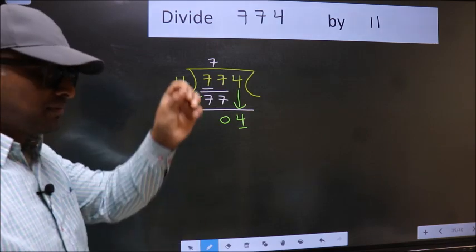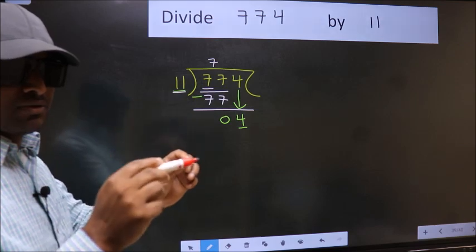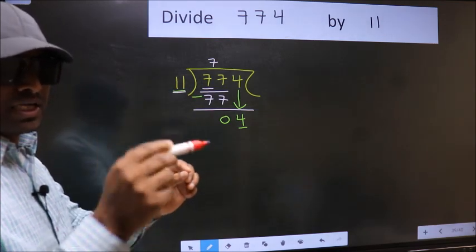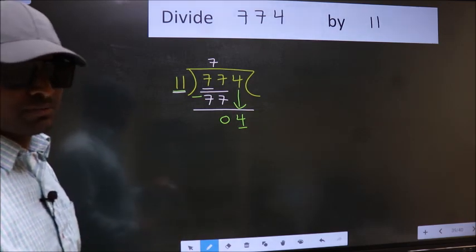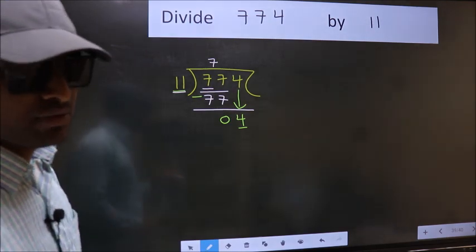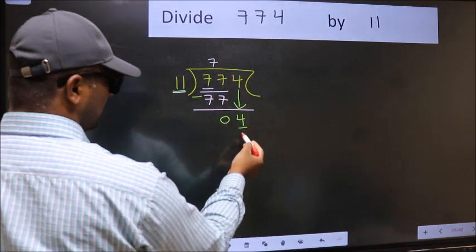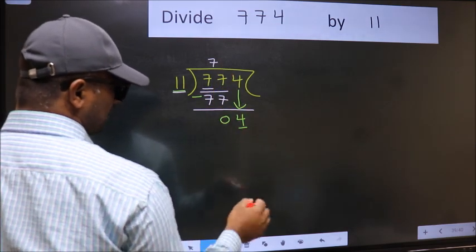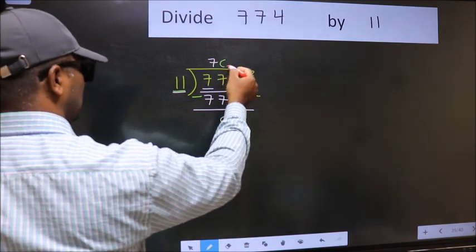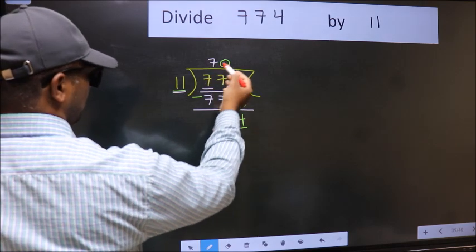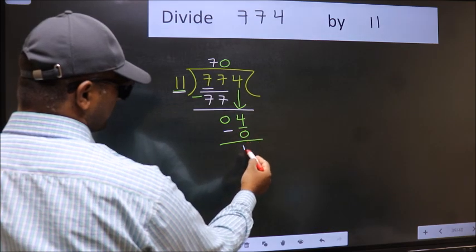I repeat: bringing the number down and also putting dot, taking 0 both at the same step, you should not do. Instead, what you should think of doing is which number should we take here? If I take 1, we will get 11, but 11 is larger than 4. So we should take 0. So 11 into 0 is 0. Now you should subtract. 4 minus 0 is 4.